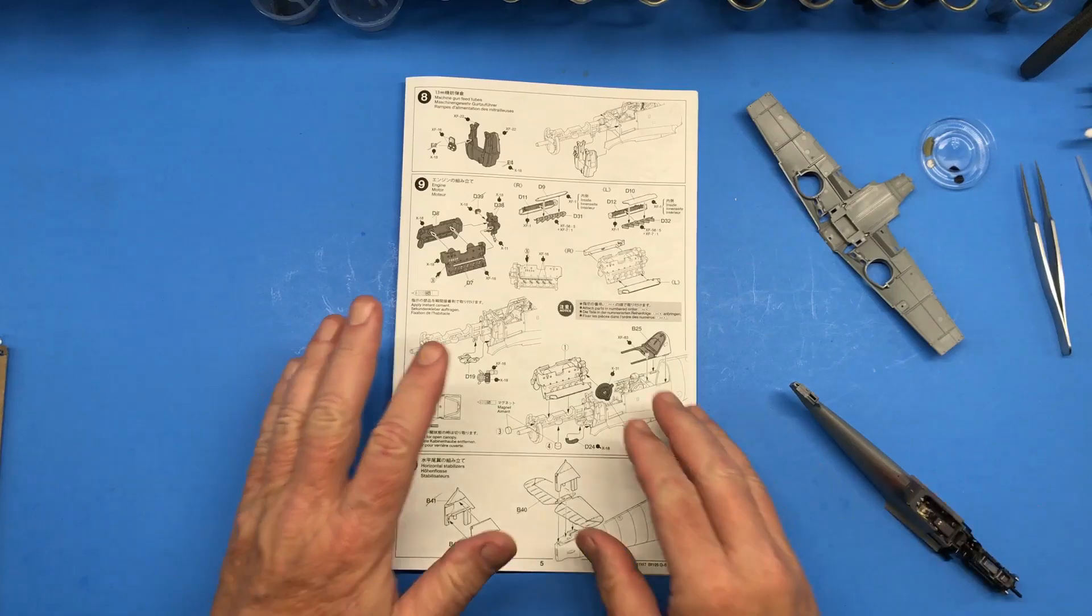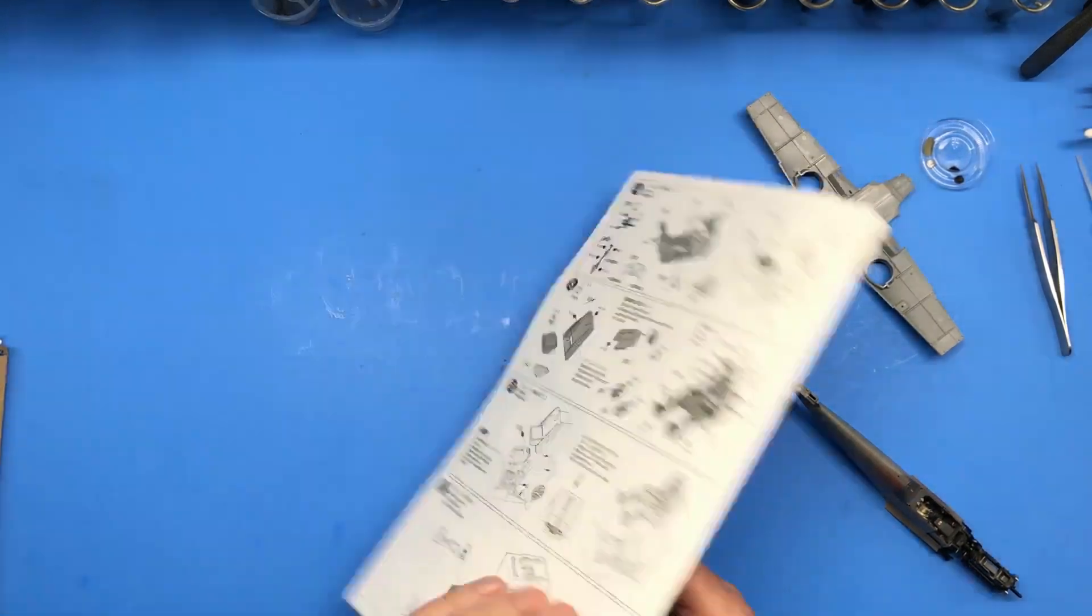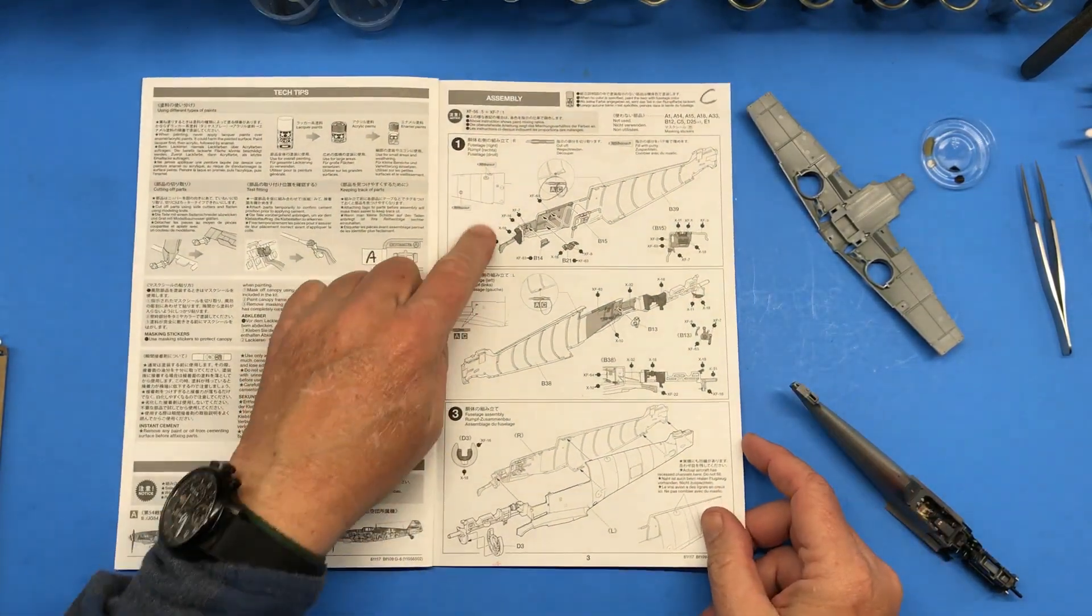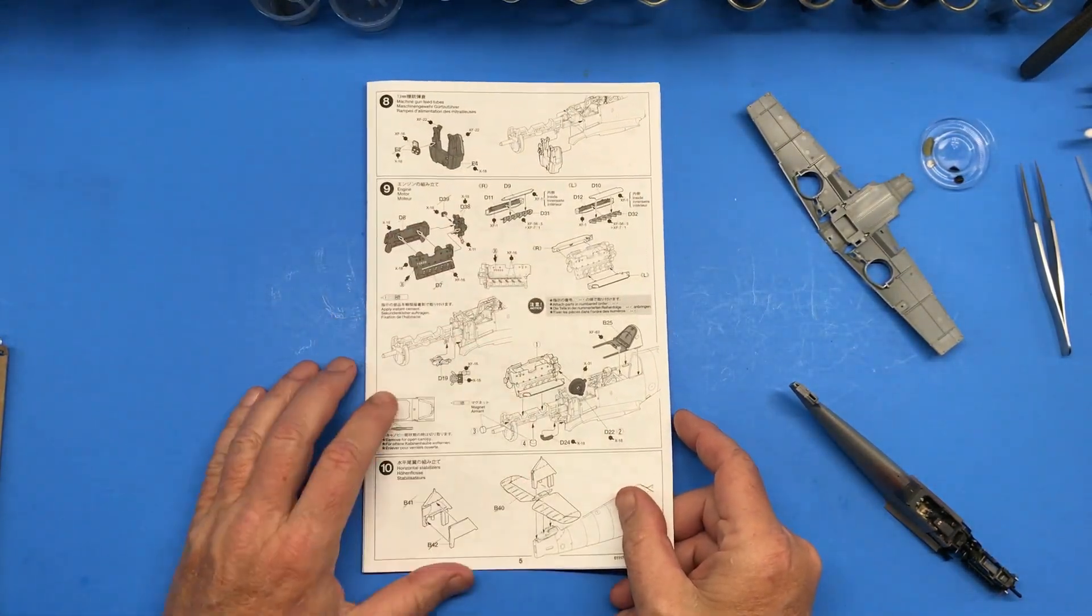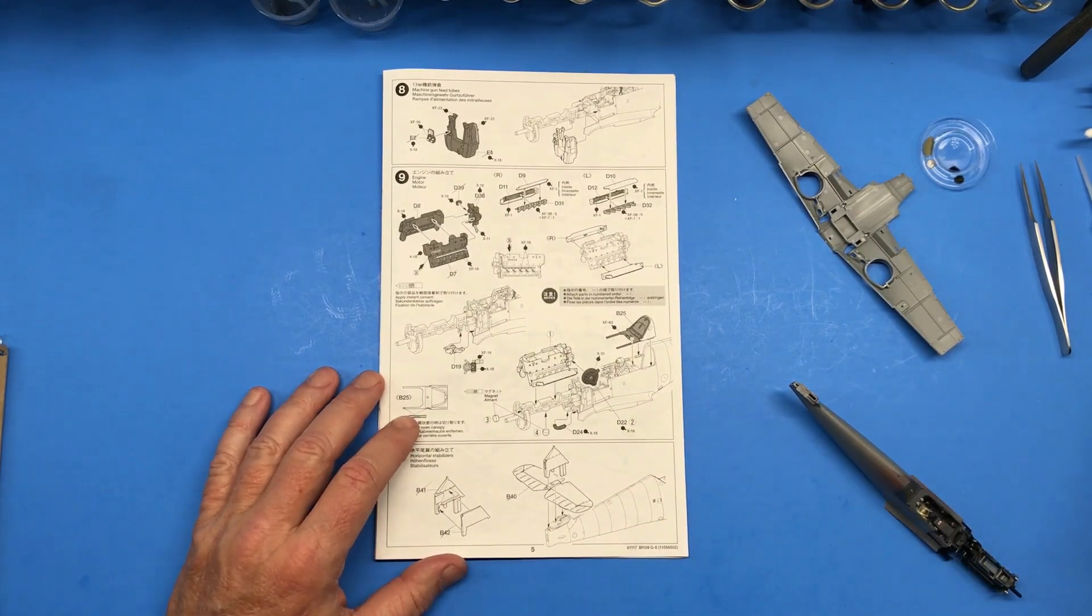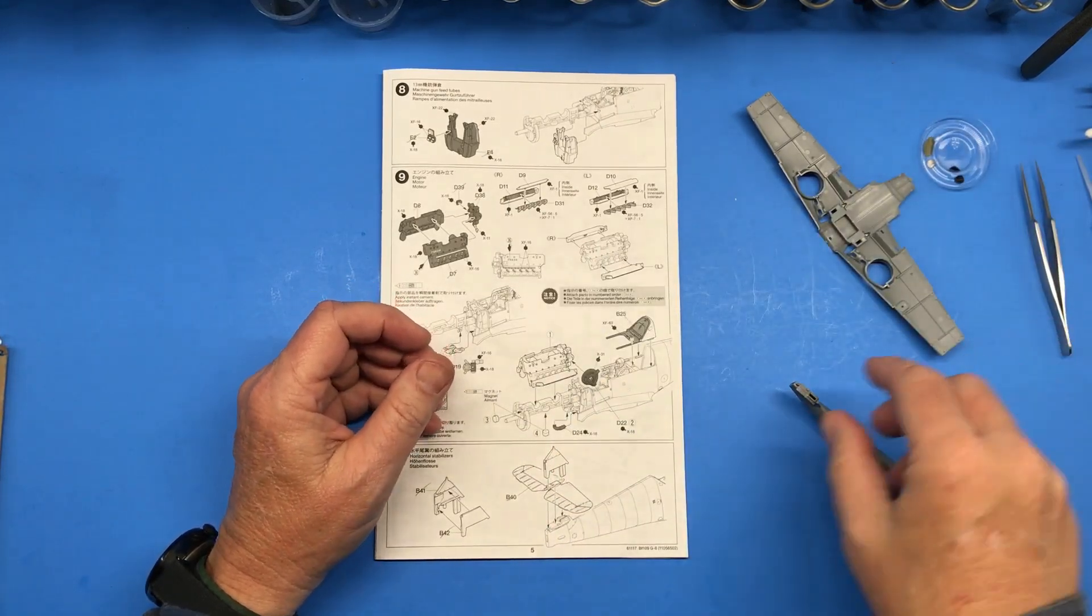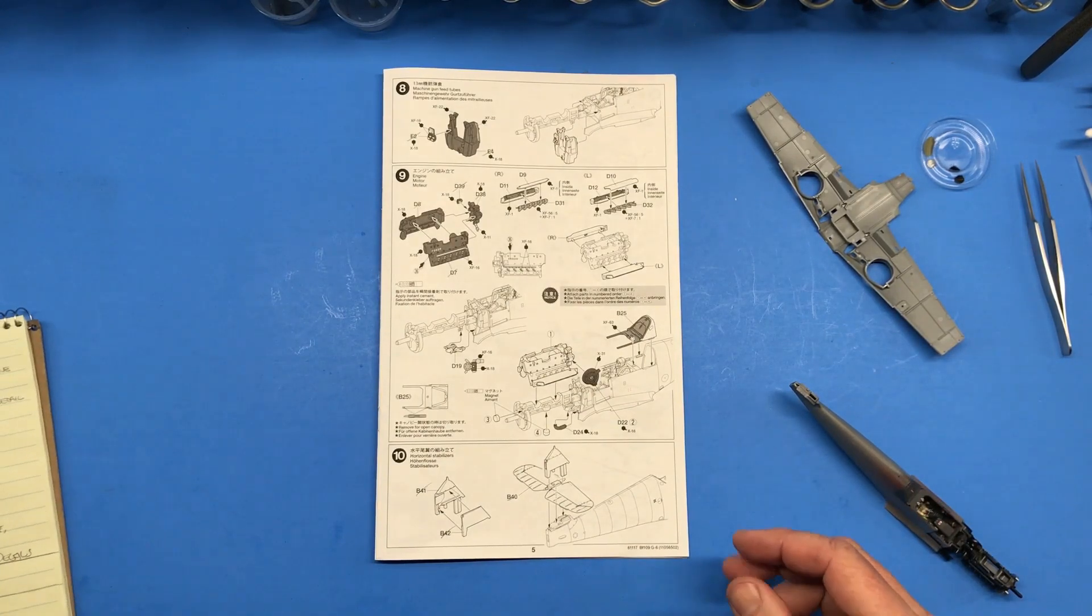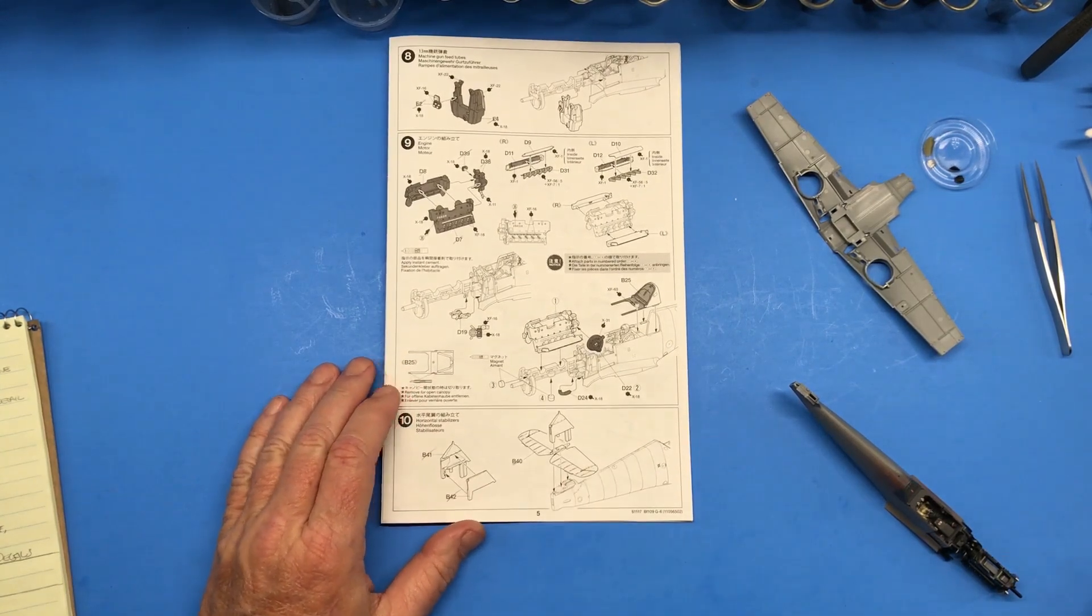Okay, back for part three. Quick recap: last video, part two, I got steps one through nine completed. Everything went well, no problems thus far. The Quinta Studio interior decal set has been working wonderfully, Mission Models paints working like it should, everything is going according to plan. Next thing is to start with part 10.